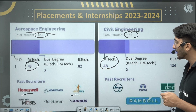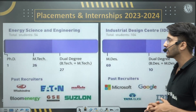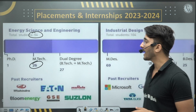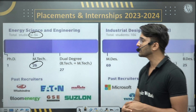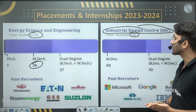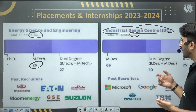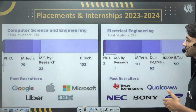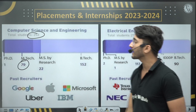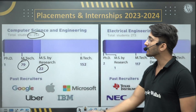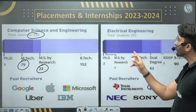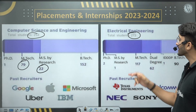For Energy Science and Engineering, 54 students were placed, with 26 from M.Tech; recruiters include Mahindra and others. Industrial Design Center placed 104 students with 69 from M.Des and 10 from Dual Degree. Computer Science and Engineering placed 253 students total, with 79 from M.Tech and 22 from MS by Research. Major recruiters include Google, Microsoft, IBM, Uber, and Apple.